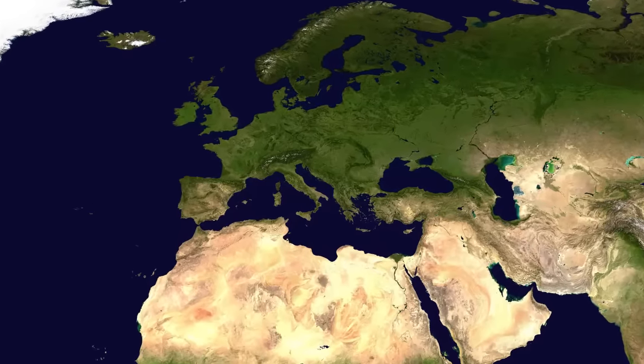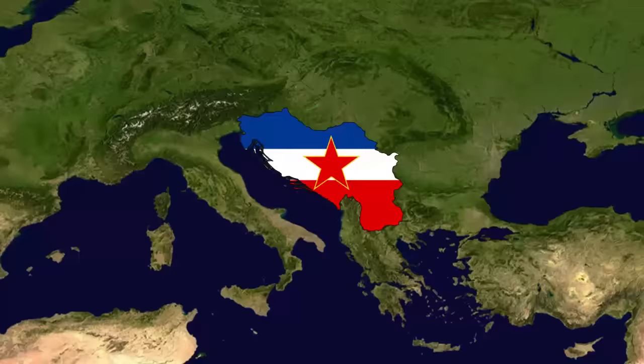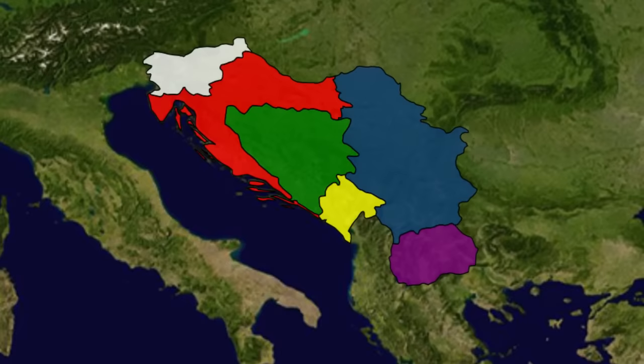For most of the 20th century, there existed a country in south-eastern Europe called Yugoslavia. Today, however, what used to be Yugoslavia is now 6 fully independent countries, plus one more self-declared independent country, but more on that later. So why exactly did Yugoslavia split up? Well, before we look at why it split up, let's first look at how it came to be.